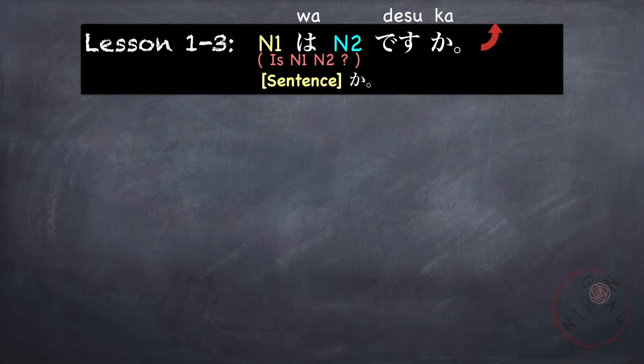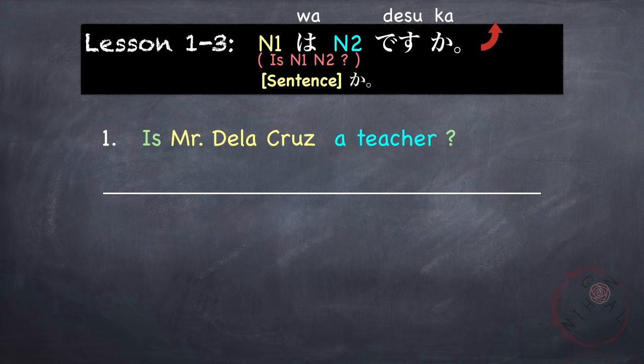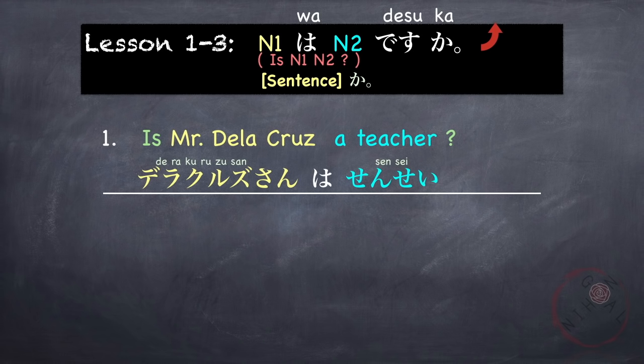Our third grammar point is how to make a question in Japanese. It's very easy. Remember the first pattern — N1 wa N2 desu — because all you need to do is add ka at the end, and that makes the sentence a question: Is N1 N2? For example, 'Is Mr. Delacruz a teacher?' — Delacruz san wa sensei desu ka? with a rising intonation.